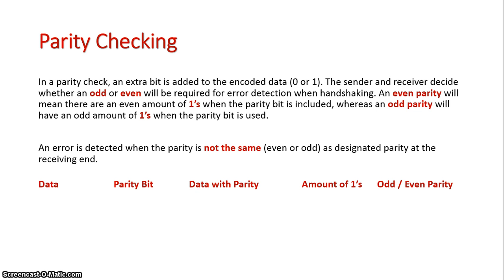Here are some examples of certain parities. If I have the number 1 and my parity bit is 1, the data sent is 1, 1 — and there are two 1s, which makes it an even parity.